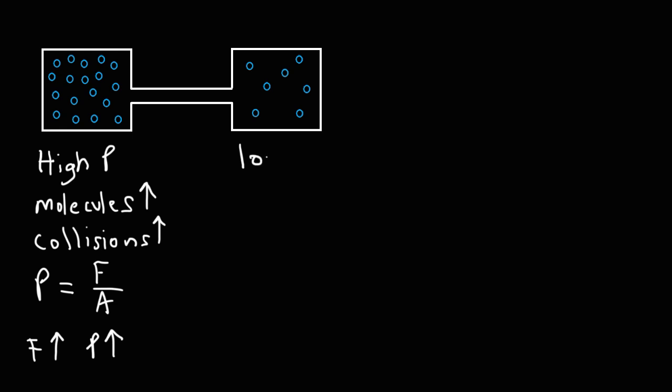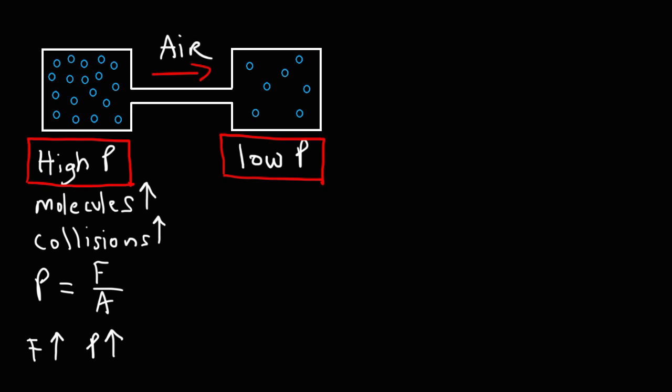So the right side must have less pressure than the left side. Here's a question: in which direction will air flow? Will it flow from the right side to the left side or from the left side to the right side? Air will naturally flow from a region of high pressure to a region of low pressure. There are more gas molecules on the left side, so those will, by diffusion, just flow into the chamber on the right side.